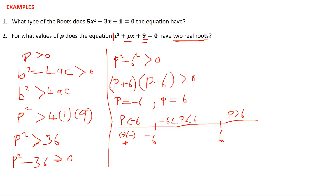Testing a number between negative 6 and 6, we use zero: zero plus 6 is positive 6, and zero minus 6 is negative 6. Positive times negative gives a negative result. Testing p equals 7: 7 plus 6 gives positive 13, and 7 minus 6 gives positive 1. Positive times positive gives a positive result.